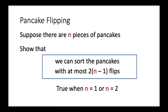When we have two pieces of pancakes, either they are already sorted and no flip is needed, or the pancakes are upside down with 2 on top of 1, and we need just one flip to sort them. So the base case for n equals 2 is also satisfied.